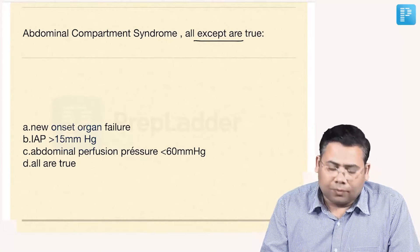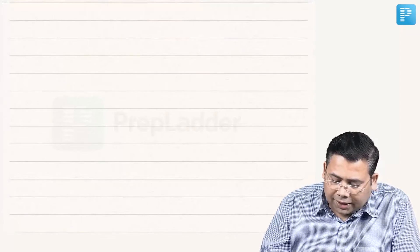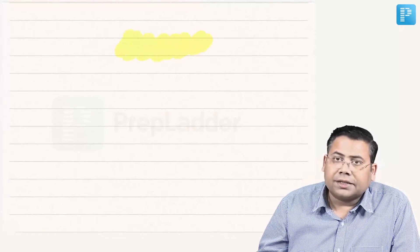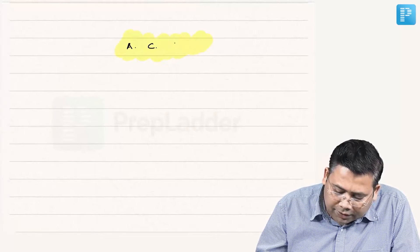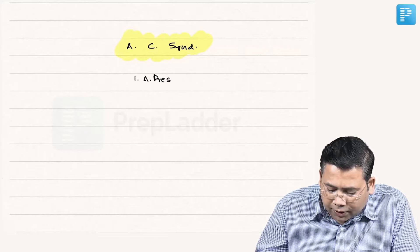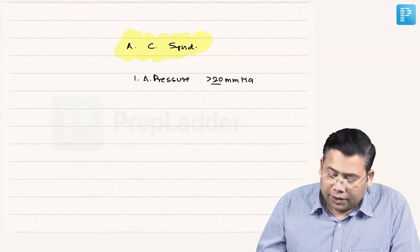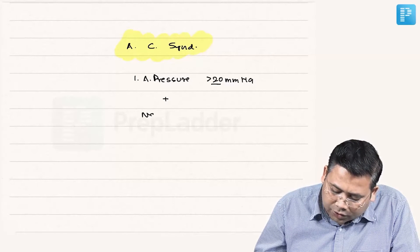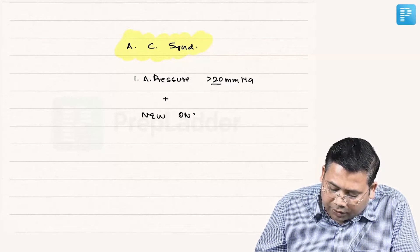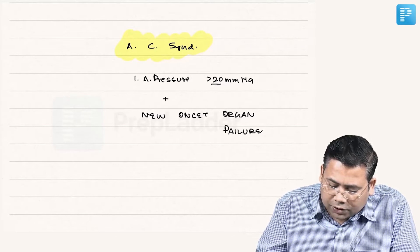Let us take two minutes and talk about abdominal compartment syndrome, then we will come to the options. What is the criteria for ACS? Abdominal compartment syndrome is defined as intra-abdominal pressure more than 20 mmHg, plus new onset organ failure. Remember: new onset organ failure — this is very, very important.